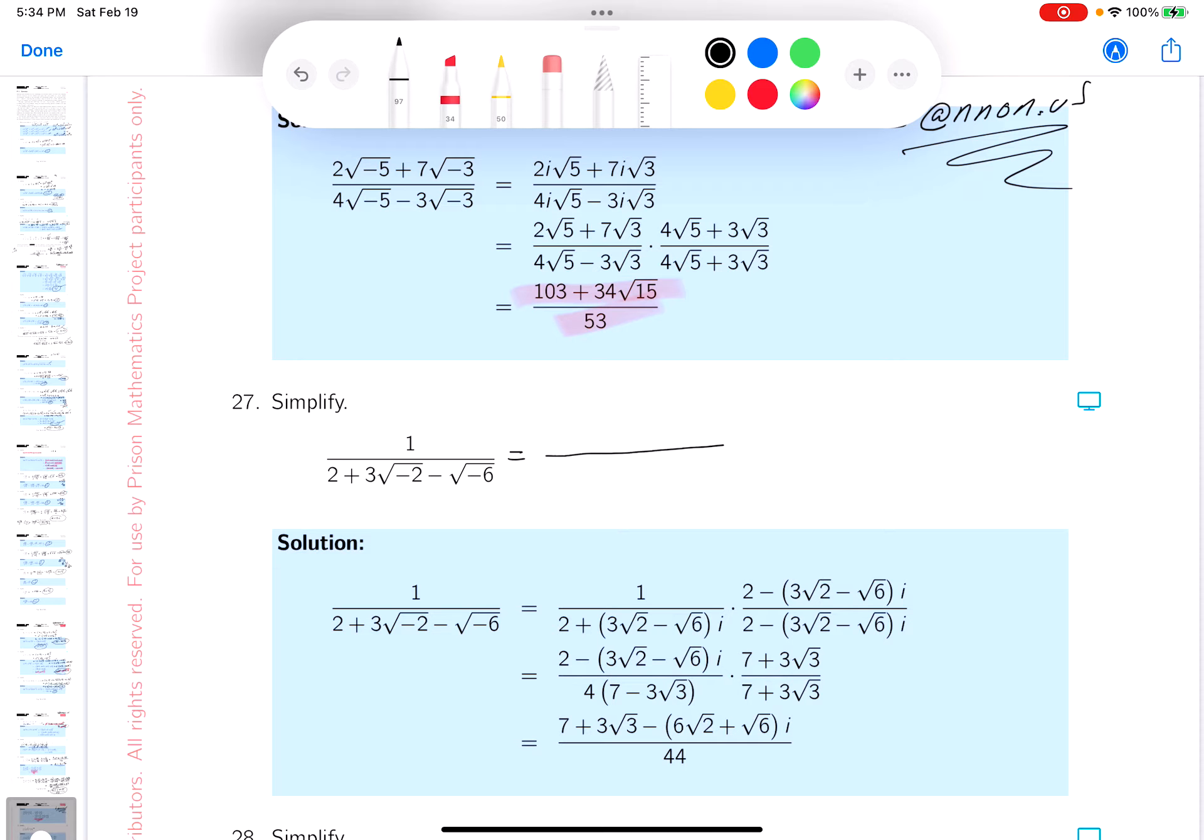Okay, I can't say enough times: get that i out. So it's 1/(2 + i·3√2 - √6). I'm going to write this in what some people call a funny way - I'll put the i here and then 3√2, and then minus √6.